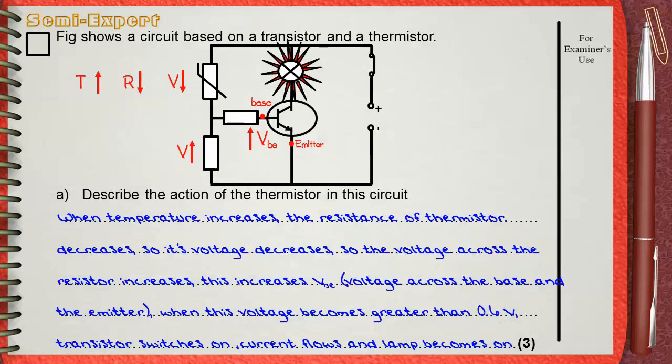When this voltage becomes greater than 0.6 volts, transistor switches on, current flows in the lamp. So it becomes on.